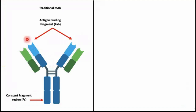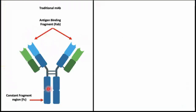In my previous videos, I talked about the traditional monoclonal antibodies. As you see here, a traditional monoclonal antibody has two regions: one called FAB or antigen binding fragment, and the tail region that's called FC region or fragment crystallizable. As you see, the traditional monoclonal antibody has two arms and both are antigen binding fragments.